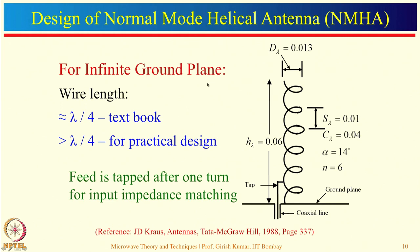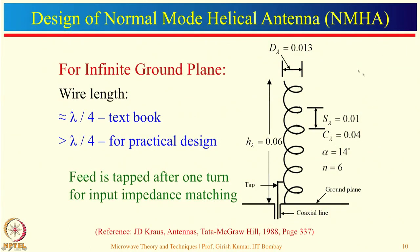This design example is for an infinite ground plane, taken from the Kraus book (page 337). C_lambda is taken as 0.04, so D equals C_lambda/pi. S_lambda is taken as 0.01. With N equal to 6 and alpha equal to 14 degrees, total height comes out to be 0.06 lambda. The total wire length works out to lambda/4, which you can verify: L_lambda equals the square root of (S_lambda² + C_lambda²), and multiplied by N=6 gives the total wire length as lambda/4.